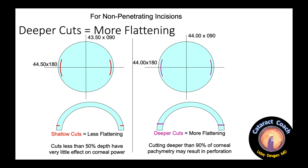Finally, remember: deeper cuts give more flattening. If you have a very shallow cut of 50% depth or less, it'll have very little effect on corneal power or the astigmatism. A very deep cut has more effect, but be careful — more than 90% depth, you run the risk of perforation, and that becomes very difficult to suture in a watertight manner because it's so perpendicular to the surface.